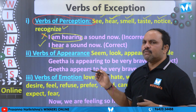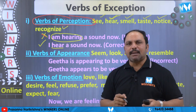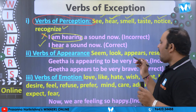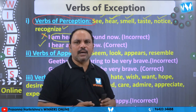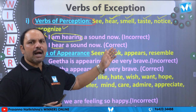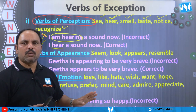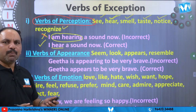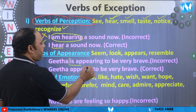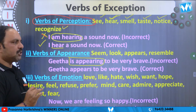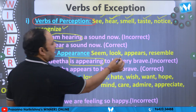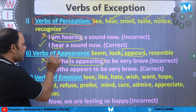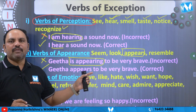Second: verbs of appearance — appearance ki sammandhinche verbs ni kuda present continuous lo vaadamu. E verbs: seem, look, appear, resemble. Udaharanakki: 'Geetha is appearing to be very brave' — ikkada is appearing ane it vaadaadhi incorrect expression. Endukante 'appear' ane idi present continuous lo undakudadhu. Correct sentence: Geetha appears to be very brave. Geetha singular kabatti appears V1s ni vaadaamu.